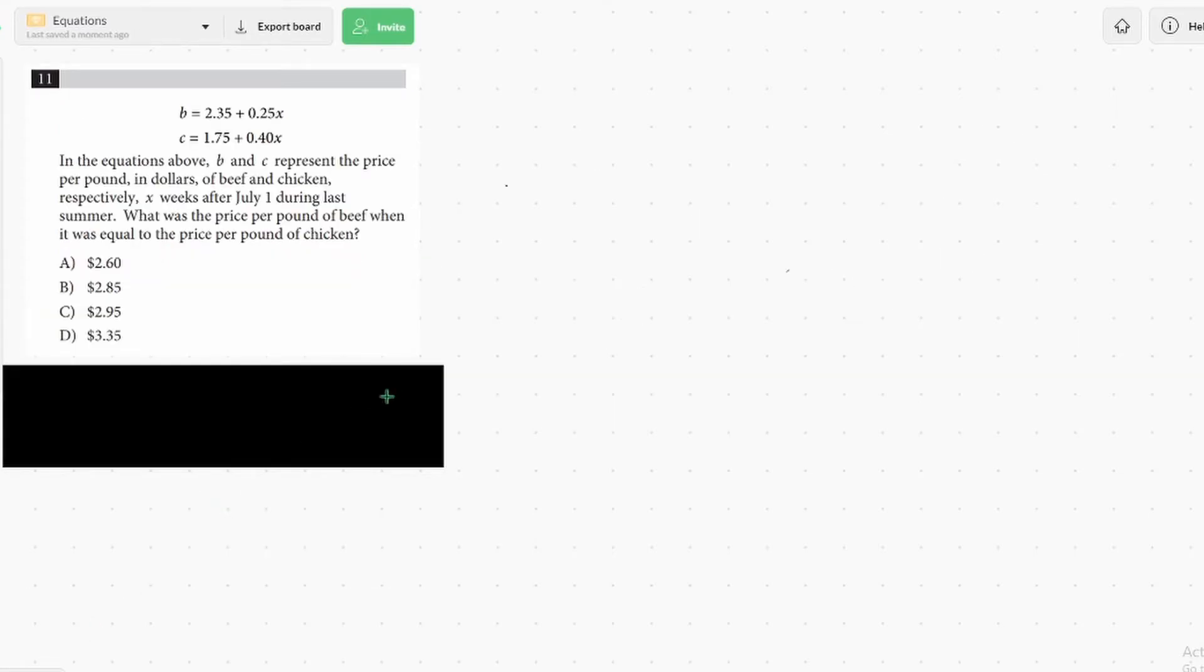And now for our last question, we have another system of equations. It says in the equations above, B and C represent the price per pound in dollars of beef and chicken respectively, X weeks after July 1st during the summer. What was the price per pound of beef when it was equal to the price per pound of chicken? So we know we want to solve these like a system of equations when they're equal. And the tip for this question...